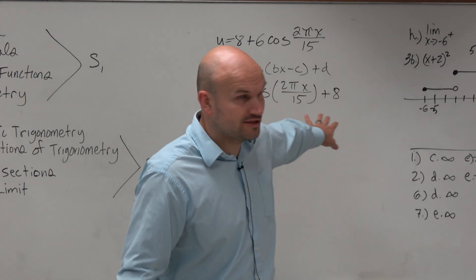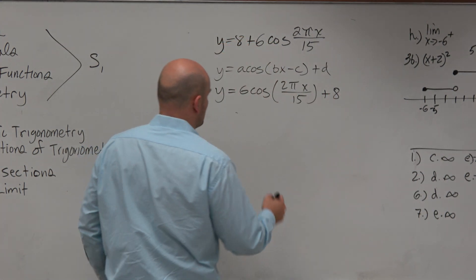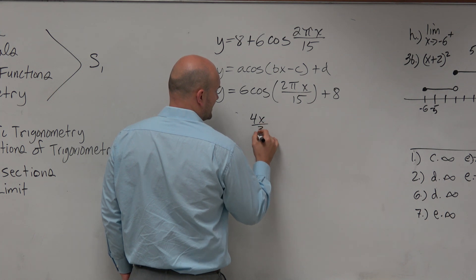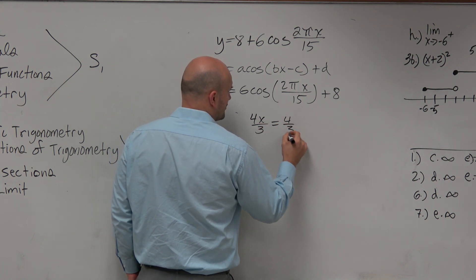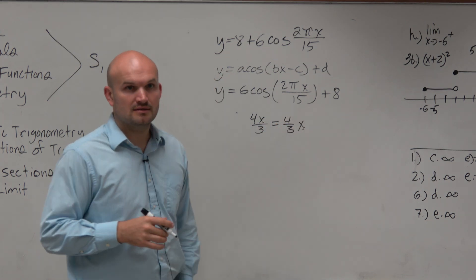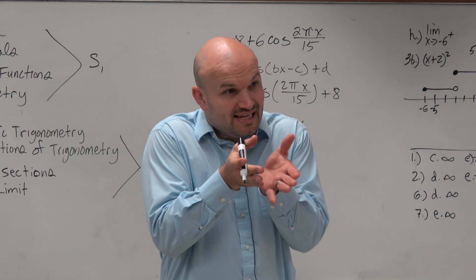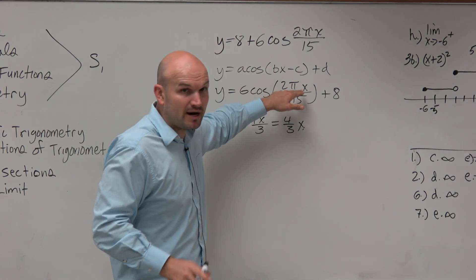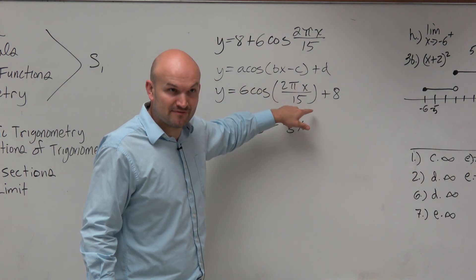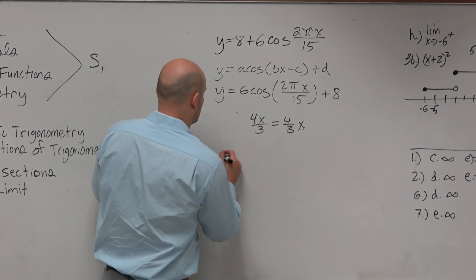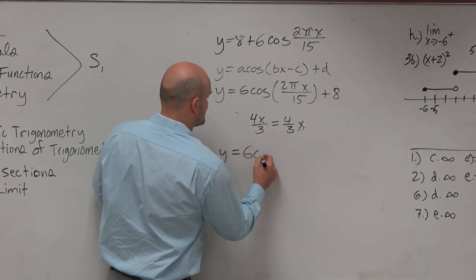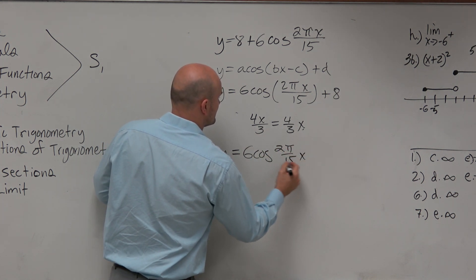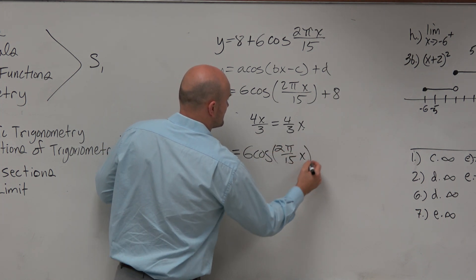You might not like the 2 pi x over 15, but just remember: 4x over 3 is the same thing as 4 thirds times x. So b is what's multiplied by x. We're not just multiplying 2 pi — we're multiplying 2 pi divided by 15, times x. So we can rewrite this equation as y equals 6 cosine of 2 pi over 15 times x plus 8.